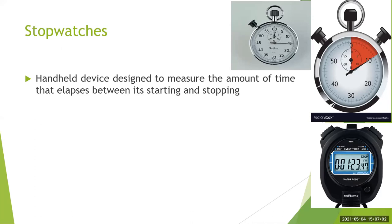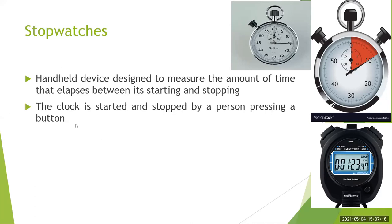For example, if we require a reaction to see how much time it takes for a color to change, we can use a stopwatch. The clock is started and stopped by a person pressing a button. You can see there are two buttons: one is to start and stop, and one is for reset.